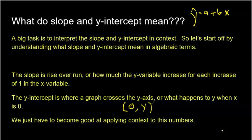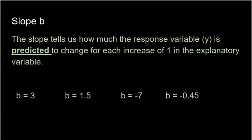We just have to become good at applying slope and y-intercept to an actual problem with actual numbers. The slope tells us how much the response variable y is predicted to change for each increase of 1 in the explanatory variable. The key word is predicted — we're never going to say that x will make y change; it's just a prediction.